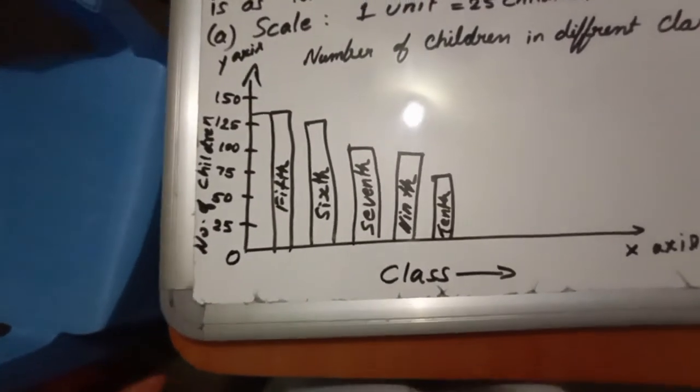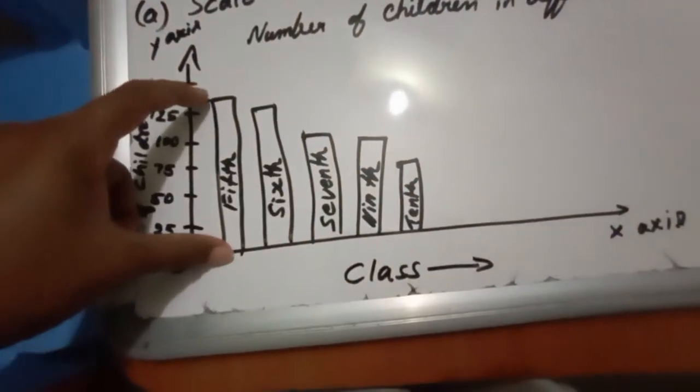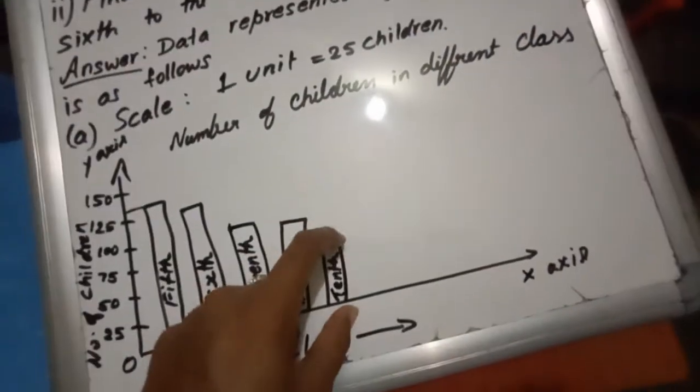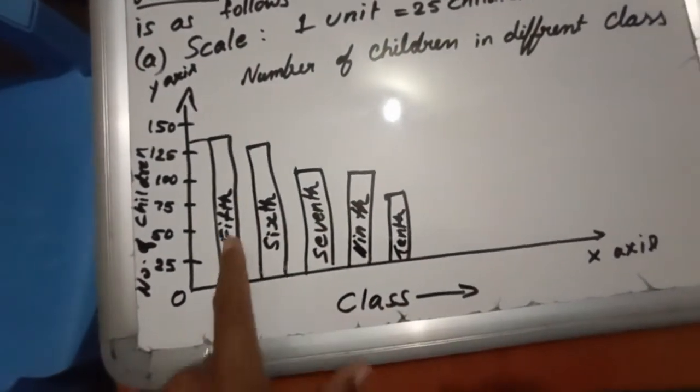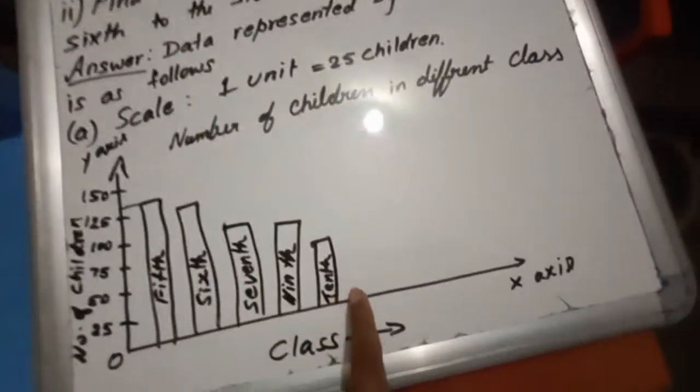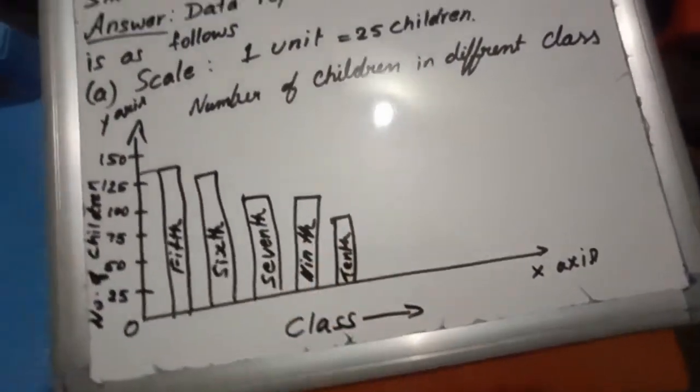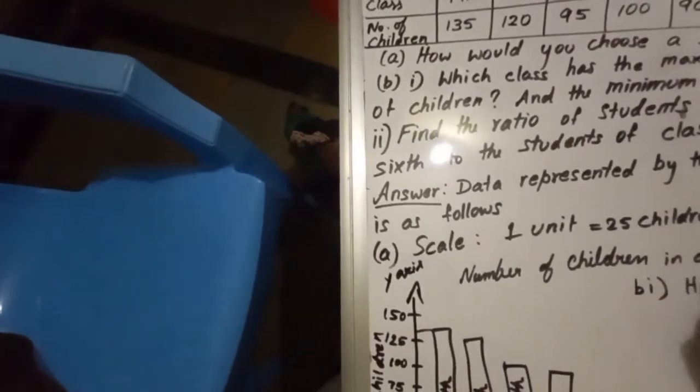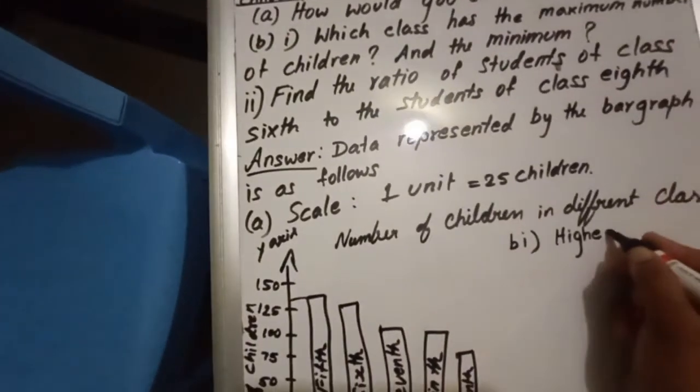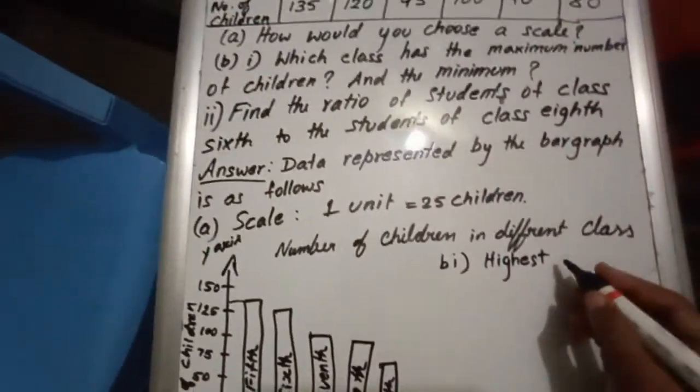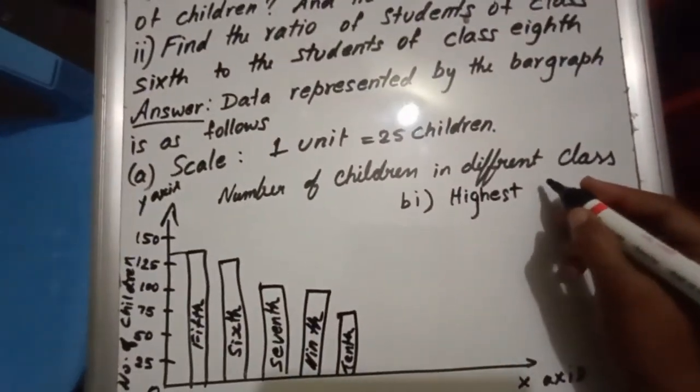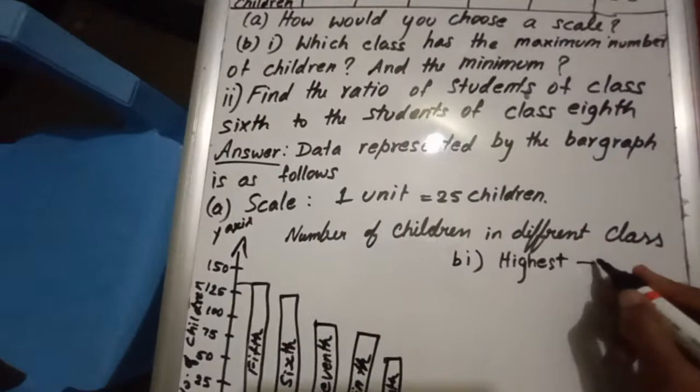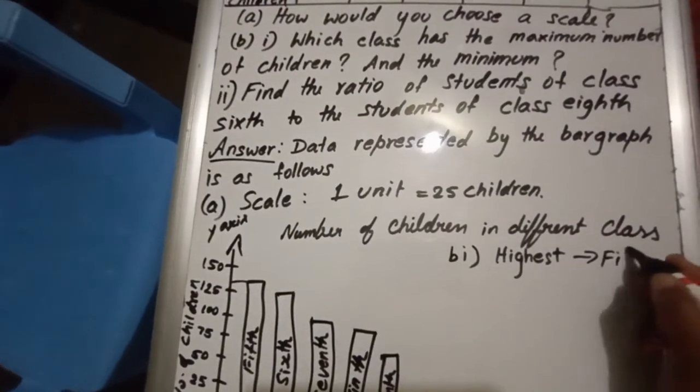By seeing the graph you will understand this is the highest, this is the minimum. Highest which class? Fifth class. Minimum is 10th class. They ask which class? So you can write that. The answer is in the B. First one, highest. Which class? Highest, I mean maximum, is which class? 135 means fifth standard.